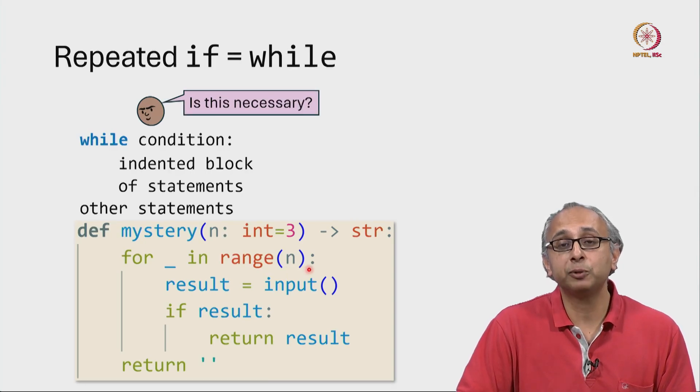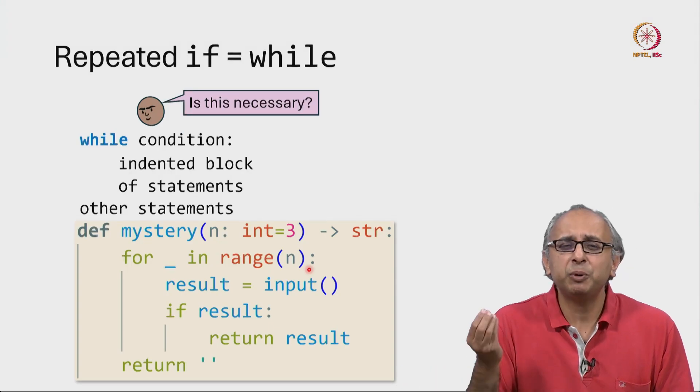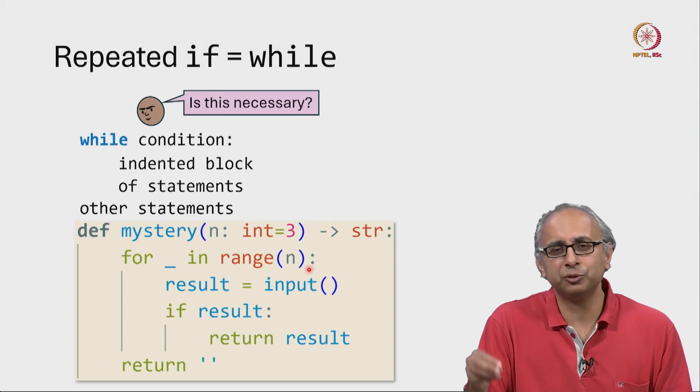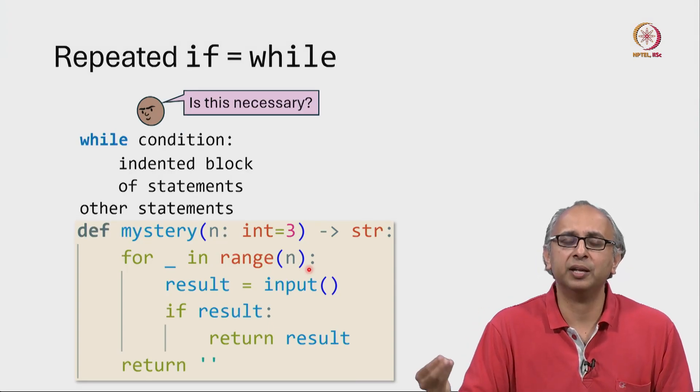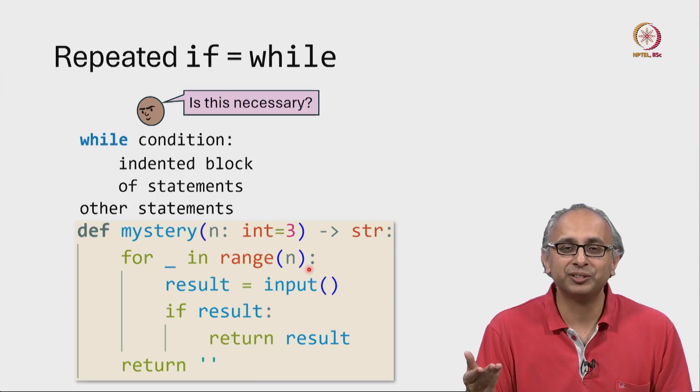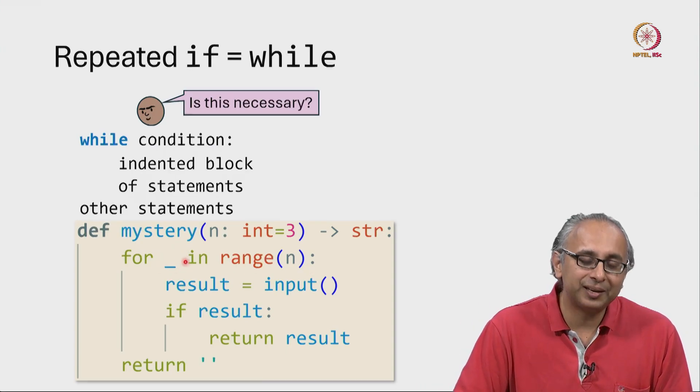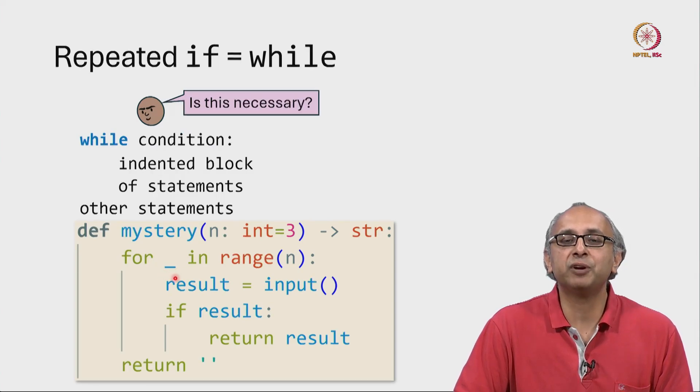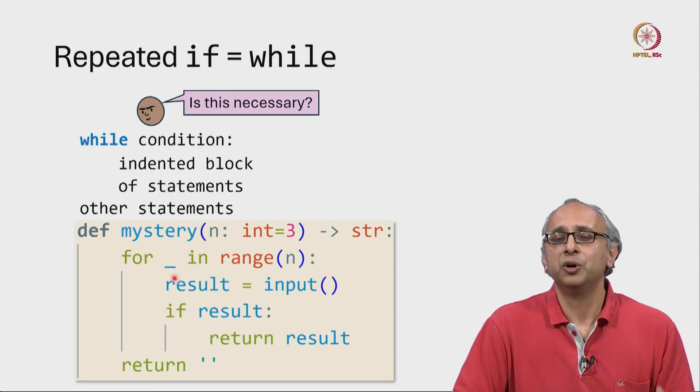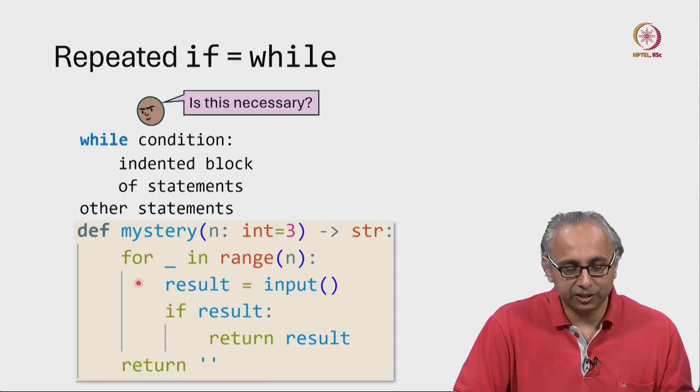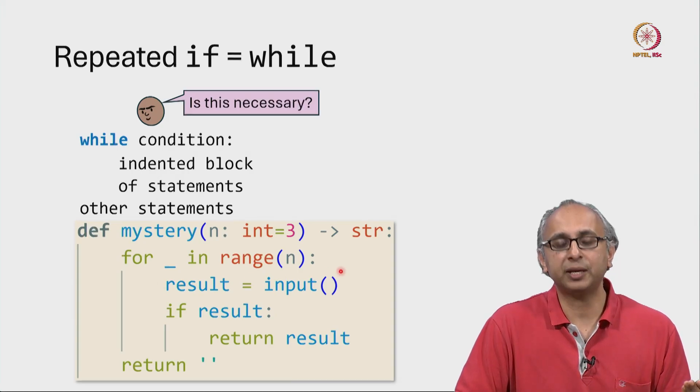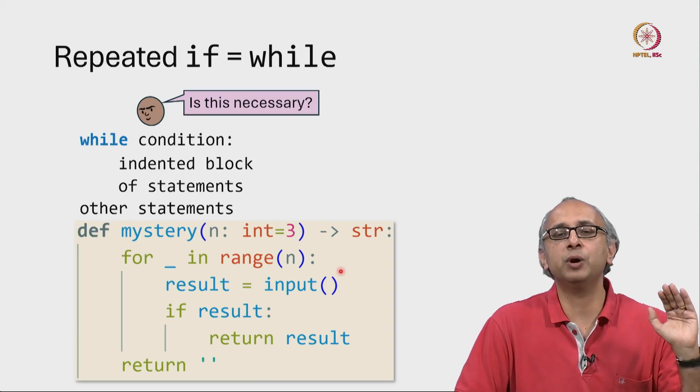Remember range of n will take the values 0, 1, 2 up to n minus 1. But we really don't care about the exact value 0 and the exact value 1 and so on. So the convention that programmers use, which is what our friend has used here is, if you don't really care about that value, use the variable name underscore. Of course it's meaningless, but it's very easy for us to recognize that this is basically do n times.